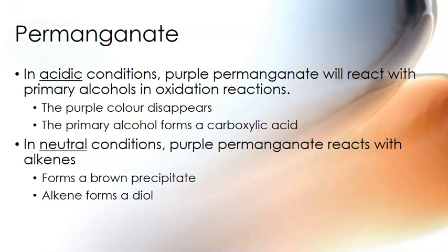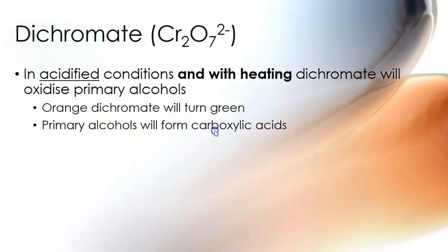If you want to distinguish between alcohols and alkenes, either use bromine water or use dichromate. Dichromate must be acidified and you also need to heat it — it won't react without heat. The orange dichromate will turn green. It reacts with both primary and secondary alcohols: the primary alcohol forms a carboxylic acid and the secondary alcohol forms a ketone.